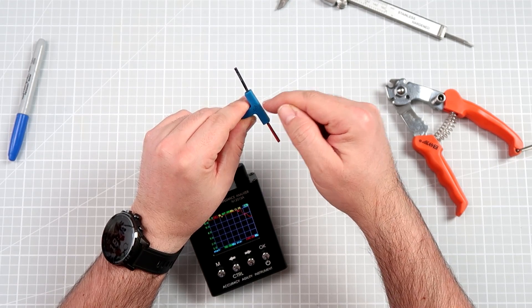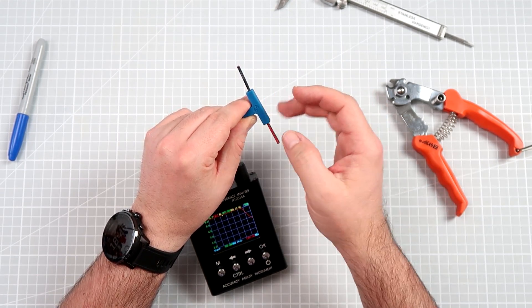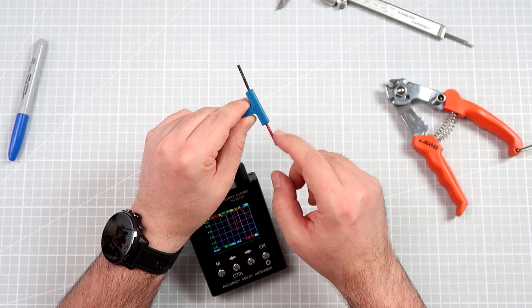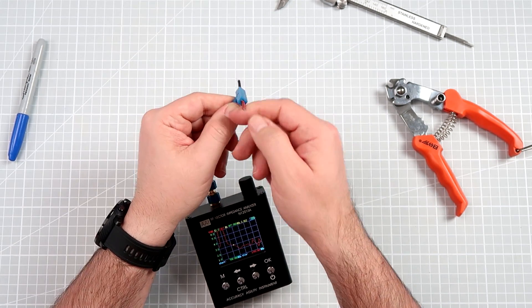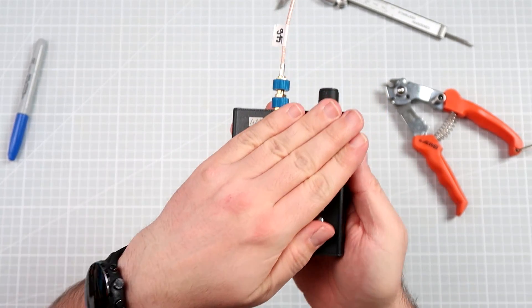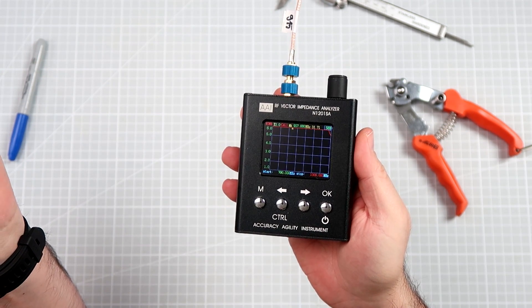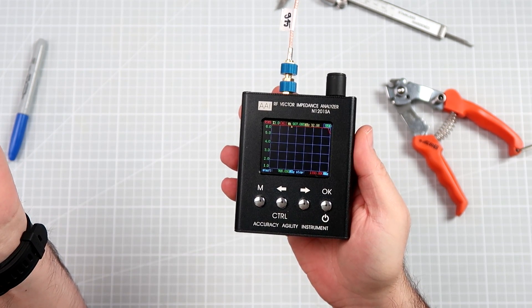This is now one eighth of the wavelength, including the velocity factor from the casing and the isolation on this. And let's take a look how this affected the tune.